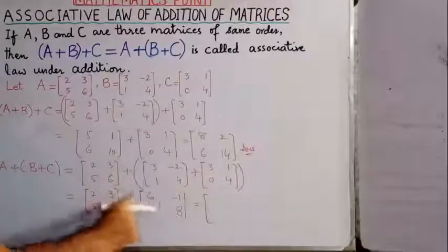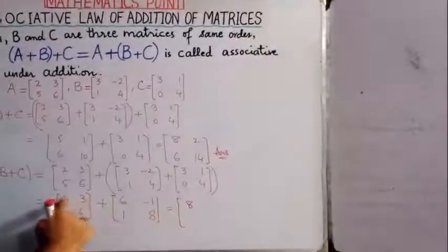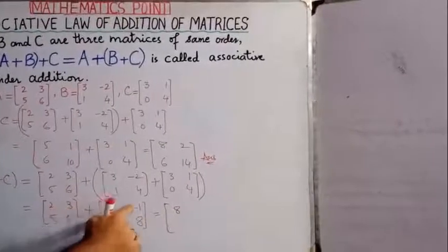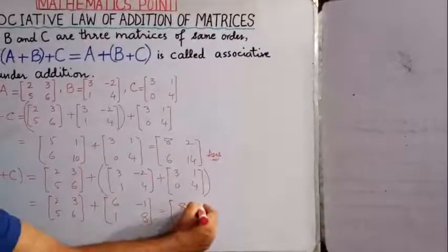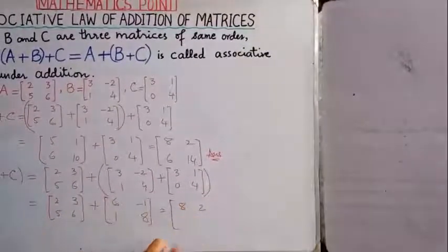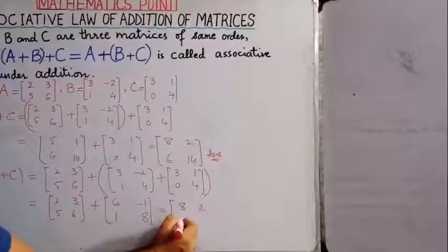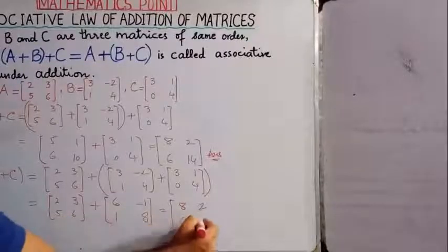A + (B + C): 2 + 6 = 8, 3 + (−1) = 2, 5 + 1 = 6, and 6 + 8 = 14.